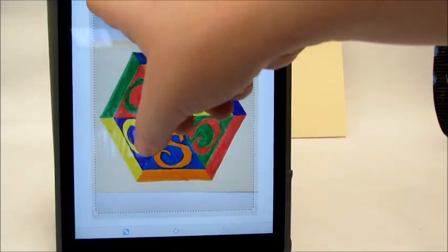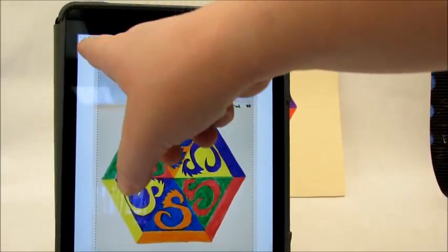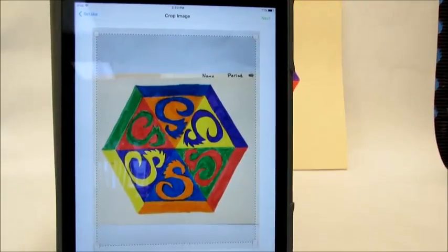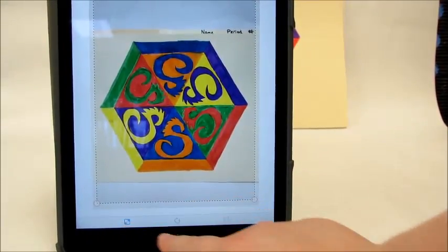At the top of the screen there's buttons for retake if you didn't like the picture you took. Otherwise you can use the editing tools at the bottom.